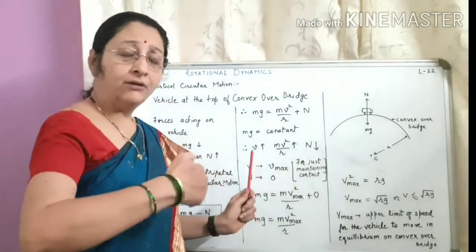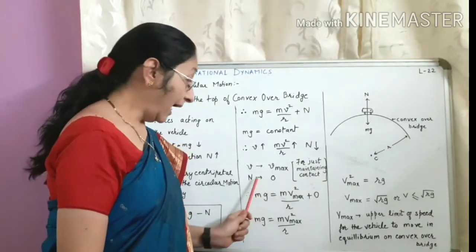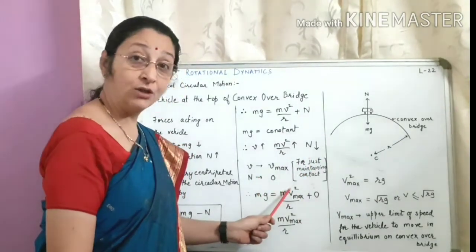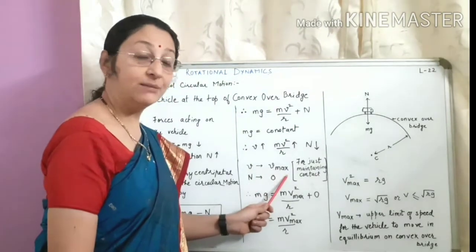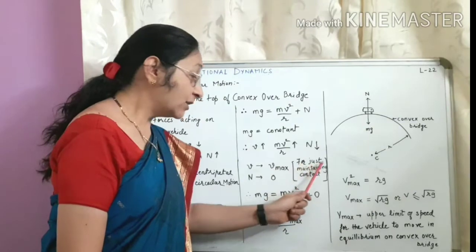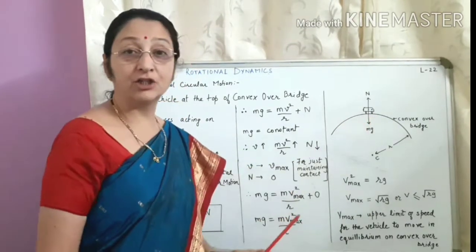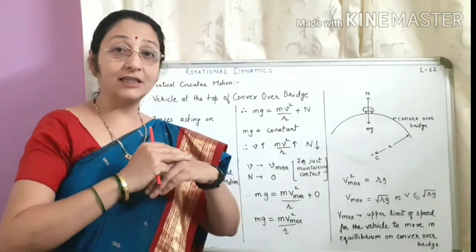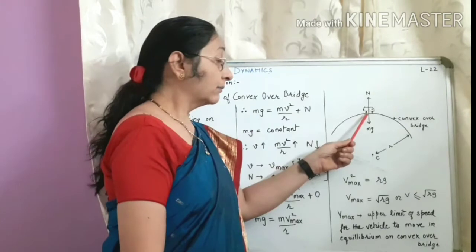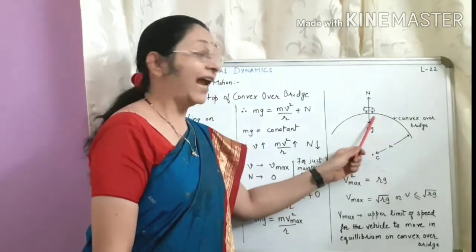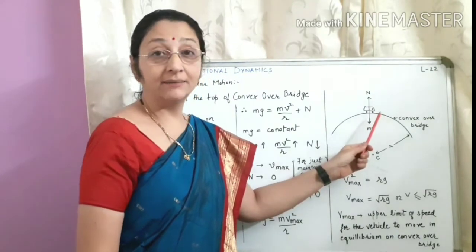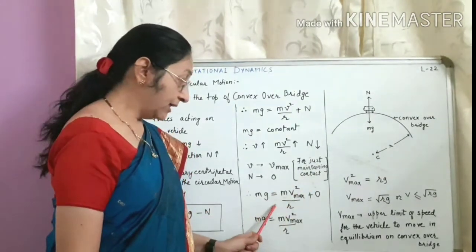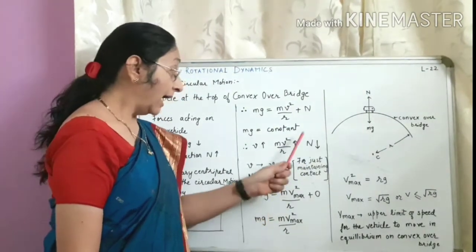As we keep increasing the velocity, a stage comes when the normal reaction decreases to zero. At that point, the velocity of the vehicle is the maximum velocity — this is the point at which the vehicle is just maintaining contact with the surface of the convex bridge. When the vehicle just loses contact with the surface, the normal reaction becomes zero, and if the vehicle moves faster, contact is lost and the normal reaction would become negative.